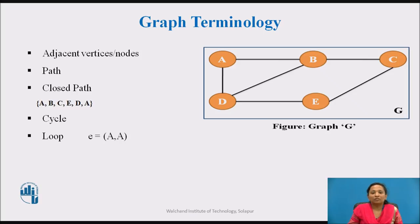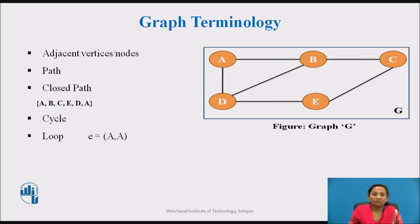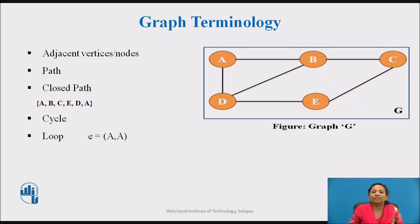Adjacent vertices are neighboring nodes. In a graph, if two vertices are said to be adjacent if an edge directly connects them. In graph G, vertex A and B are adjacent vertices whereas A and E are not adjacent vertices. In graph G, the path from vertex A to E is represented as A, B, C, E which is one path, and another path is A, B, D, E.